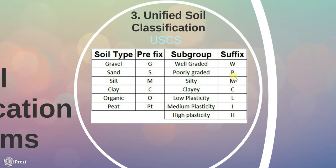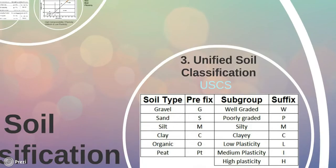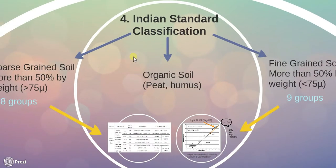So this is how we can describe the soil type. For example, if they are poorly graded gravels then we write GP, where G is the prefix and P is the suffix. If they are well graded silts then we write MW, and likewise. Let us move further to the Indian Standard soil classification system.